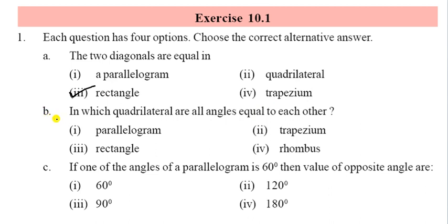Part B: in which quadrilateral are all angles equal to each other? In a parallelogram? No. Trapezium? No. In a rectangle, all angles are 90 degrees, so that one is correct. A rhombus is incorrect.